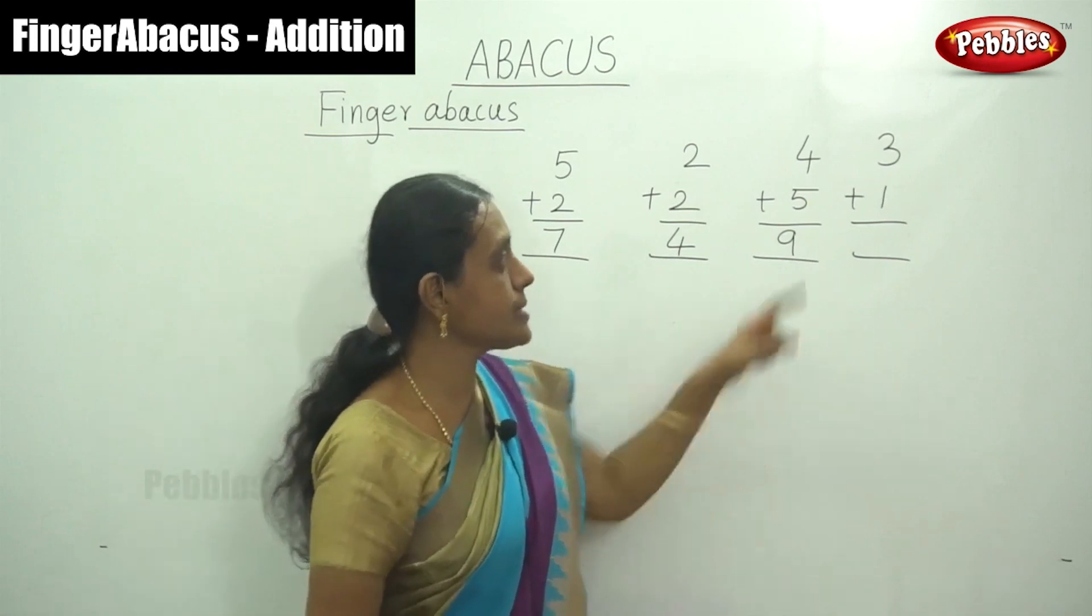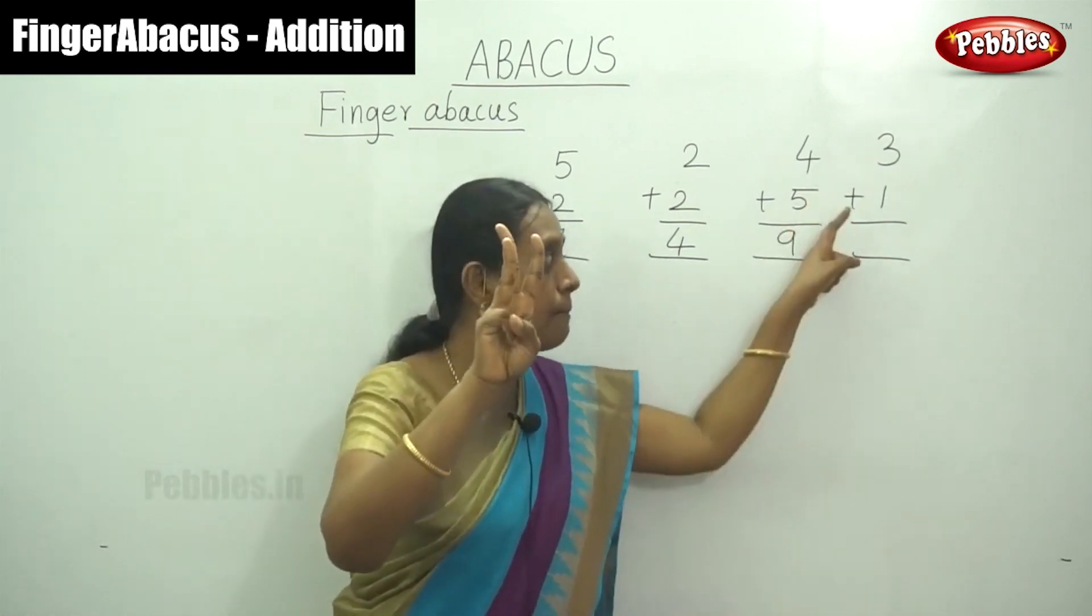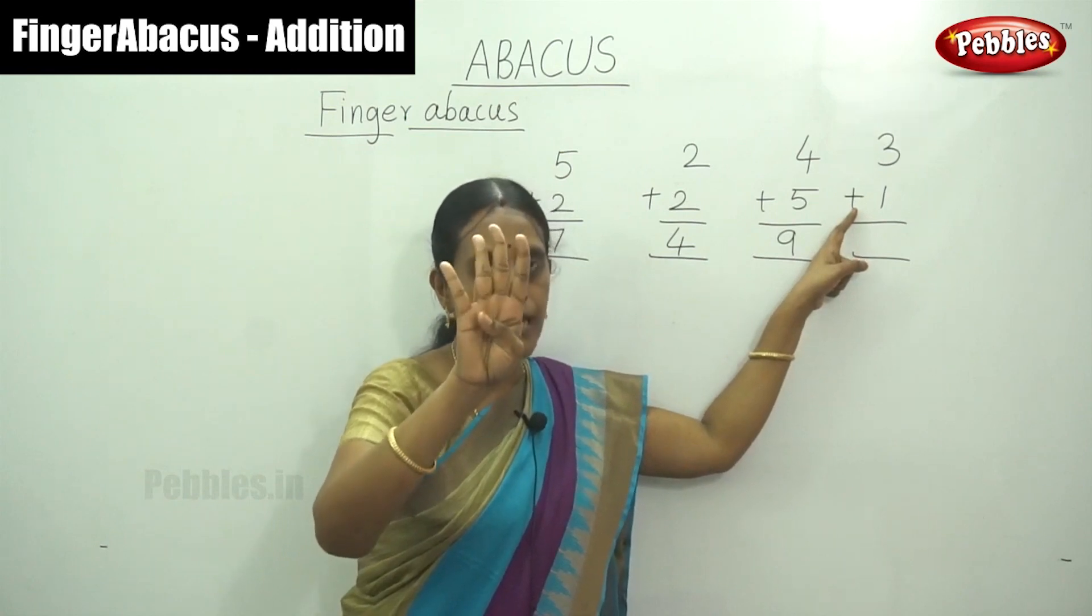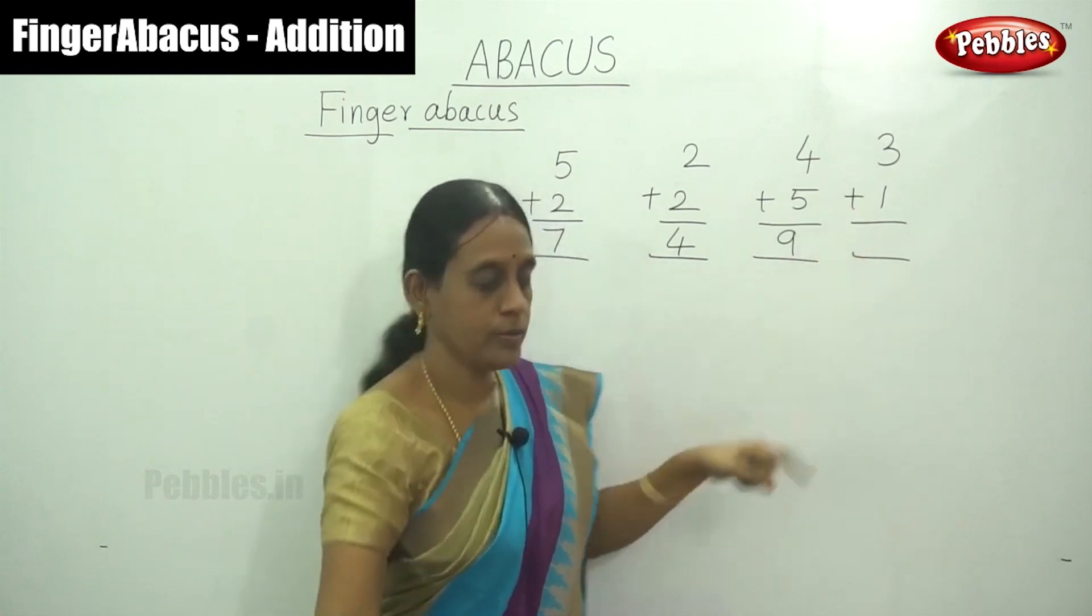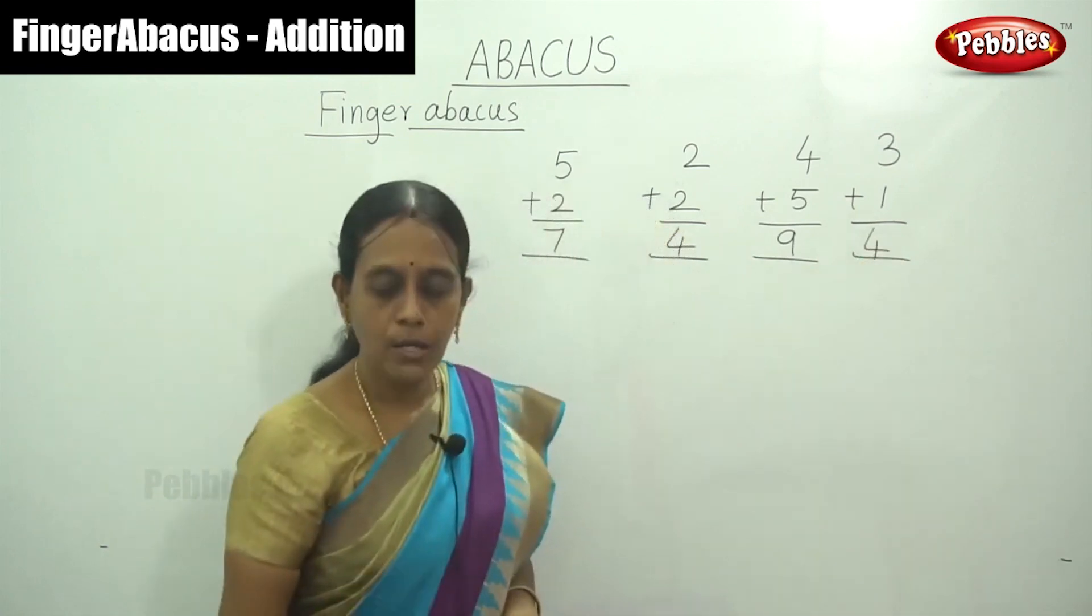And next that is 3, 3 fingers plus 1. Move 1. So now the answer is 4. Can you understand?